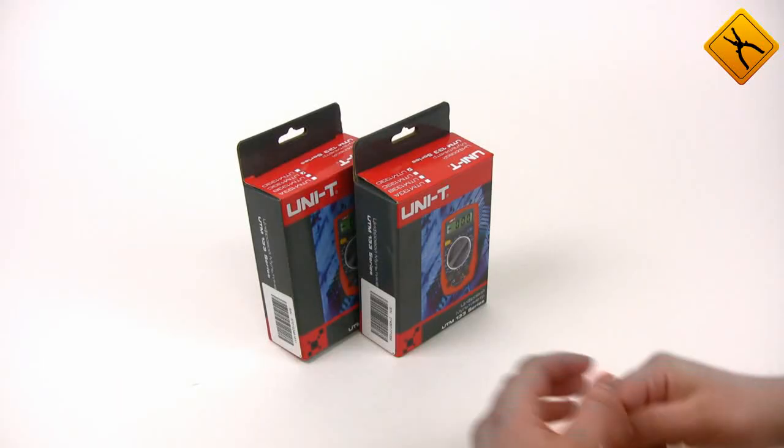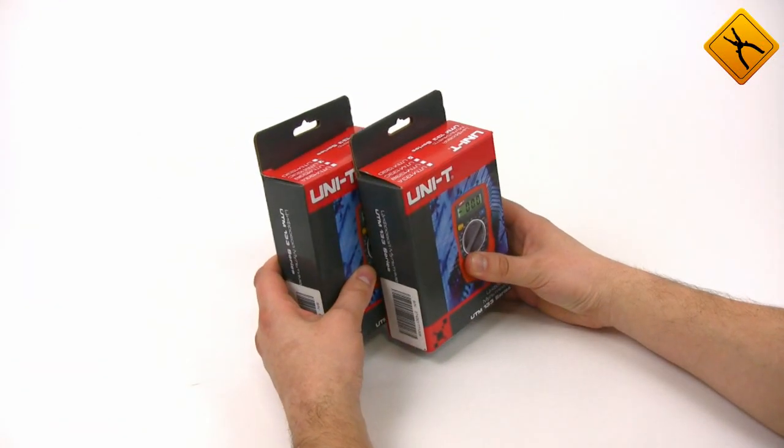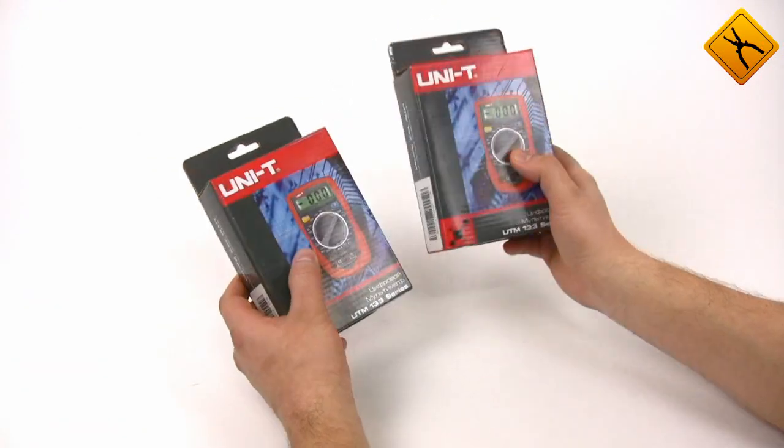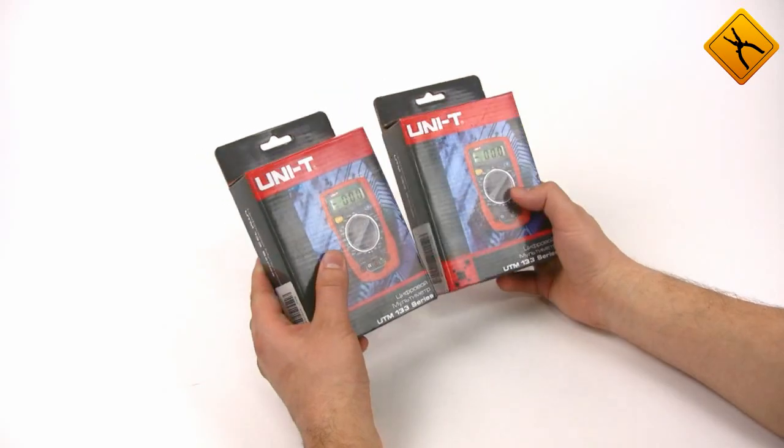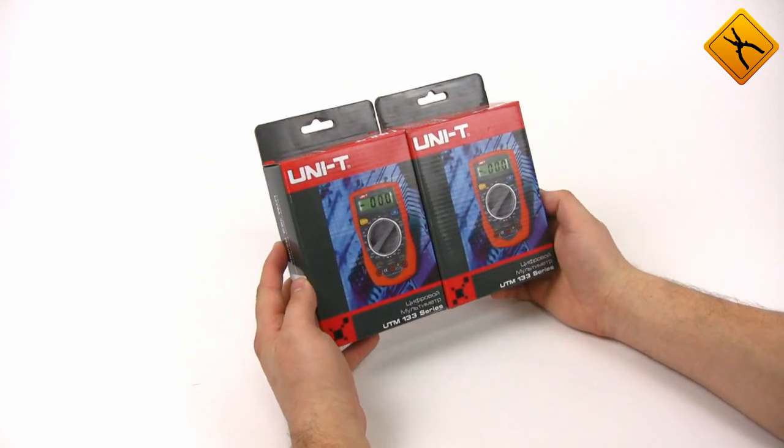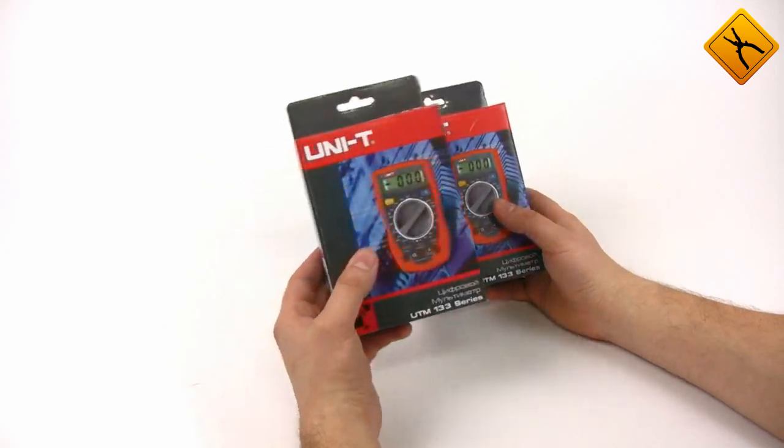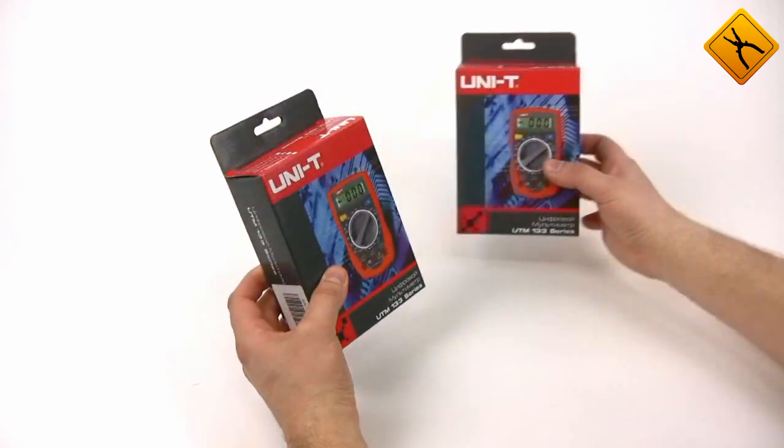Today we are having a review of two multimeters, model Unity UT33D and UT33C. The main difference between these two multimeters is that UT33C can perform temperature measurements.